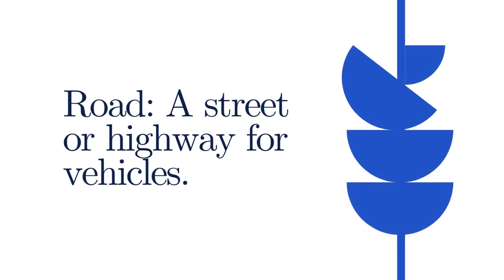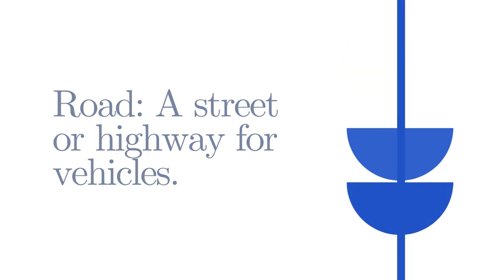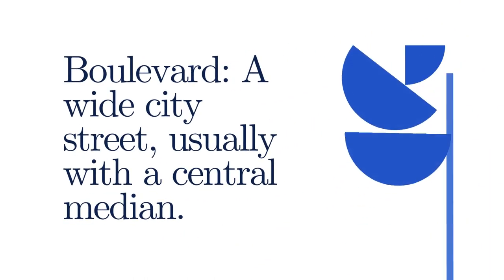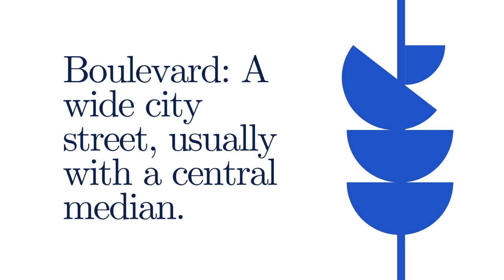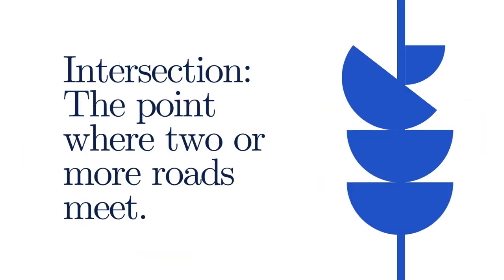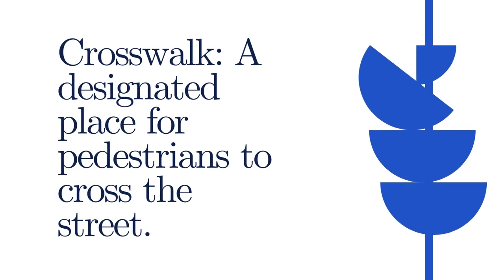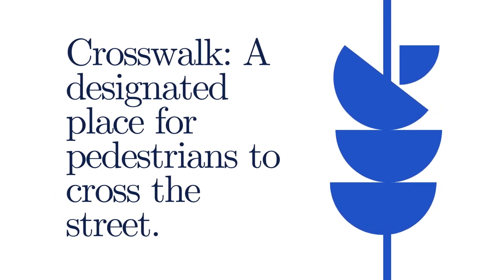Transportation and infrastructure. Road: a street or highway for vehicles. Avenue: a wide road in a city, often with trees on each side. Boulevard: a wide city street, usually with a central median. Intersection: the point where two or more roads meet. Crosswalk: a designated place for pedestrians to cross the street.